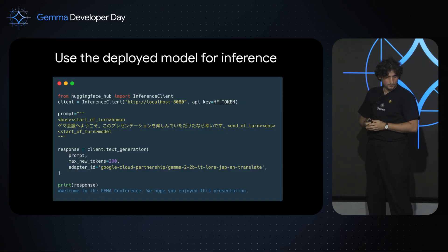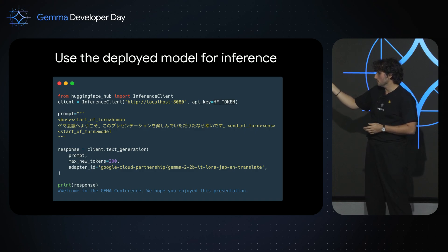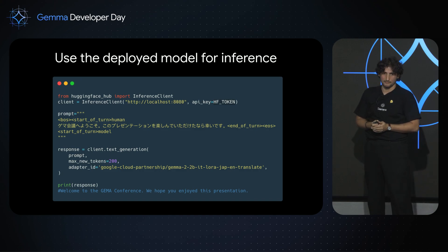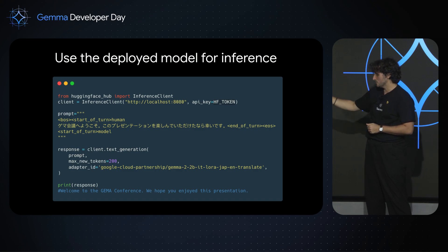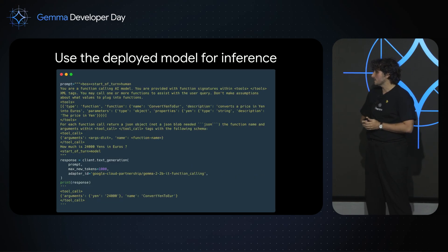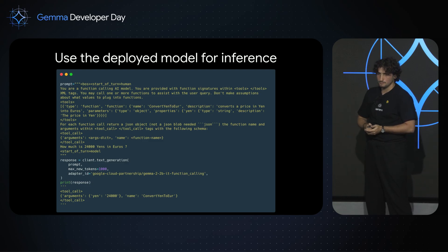Once you have followed the demo, you end up with a URL — here I did some port forwarding, so that's why it's localhost with an open port. You can directly get tokens out of that TGI instance using the inference client from HuggingFace Hub. You provide a prompt, and the important part is the adapter ID. The adapter ID I'm tapping into here is the Japanese-to-English translation. You can leave it blank if you want to hit the base model. Since I deployed four adapters, on this specific example I chose the Japanese-to-English translator. As we can see, it says 'Welcome to the Gemma conference, we hope you enjoyed this presentation.' I gave a second example where it converts 'How much is 24,000 yen in euros' using the function calling adapter, which converts it as a valid function call.